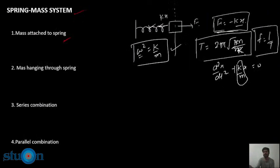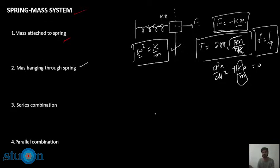Here, the k we use is always the effective k — k_effective. If there is a single spring, it has its own k. If there are two springs, we must use k_effective. If springs are in series, k_effective is different; if parallel, it is different. Now, Case 2: mass hanging through a spring.